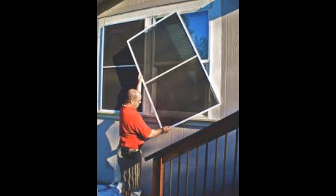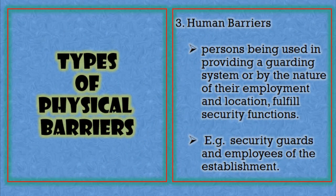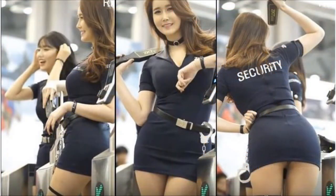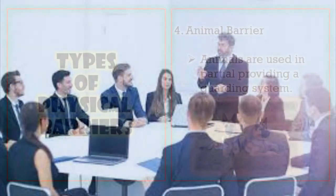Screens provide only slight protection or privacy — they are not actually meant to prevent intrusion. Next, human barriers: these are the persons used in providing guarding or security in our establishments. Examples are security guards and employees as well, because security is everybody's concern — not only the concern of security officers.